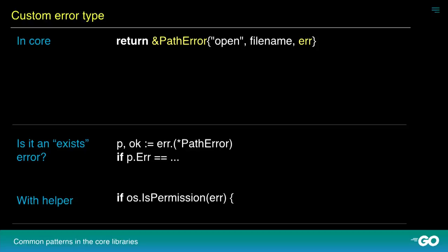The way we work around this in the core library is to define custom error types. A very common and well-known one is path error. Path error wraps a bunch of values, but most importantly it wraps the underlying cause of the error that it wants to preserve. We can use that — if you get an error back, you can cast it to path error and determine if it's a permission error, for example. It's a little bit cumbersome. So in order to make this easier, the core library provides predicate functions like isPermission to determine if an error is a permission error.